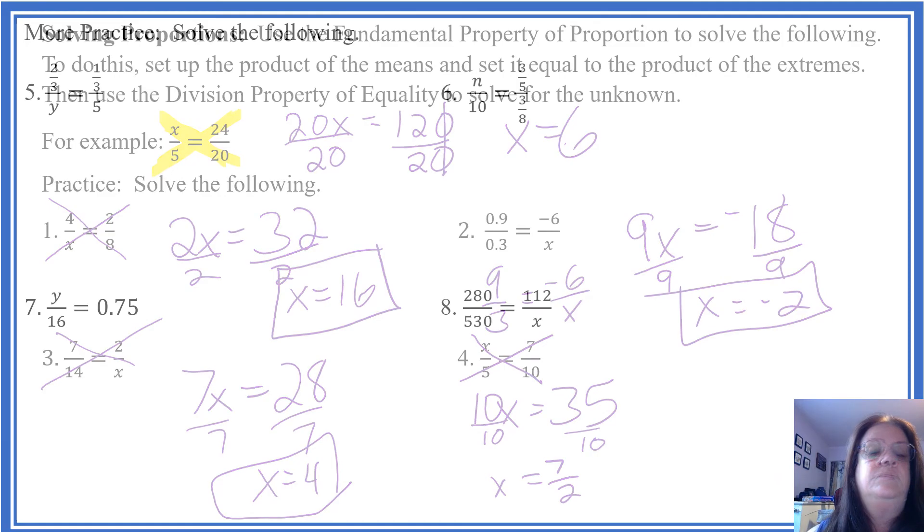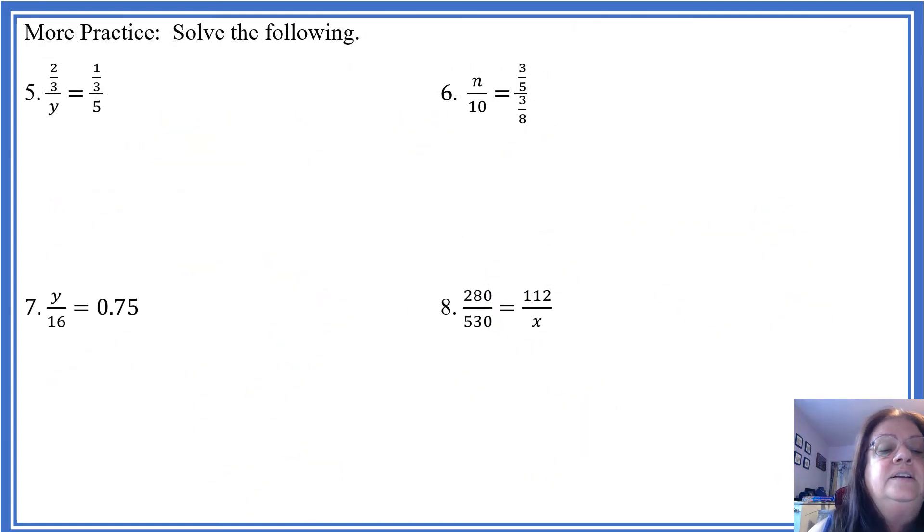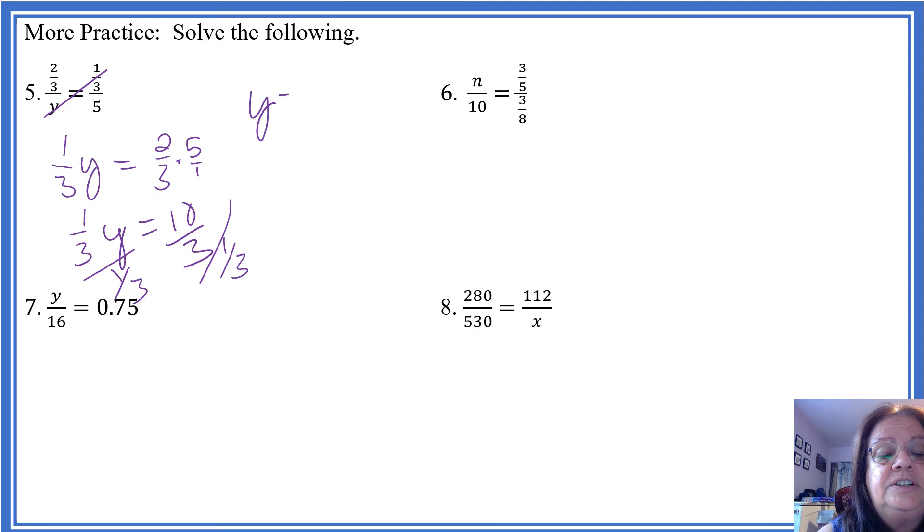One more section here. Now we're going to cross multiply. 1/3 y equals 2/3 times 5, which is really over 1. So now we've got 1/3 y equals 10 over 3. So we divide both sides by 1 over 3. We have a complex fraction and we're going to end up with 10/3 times 3 over 1. Flip and multiply. 3s cross off, y equals 10.